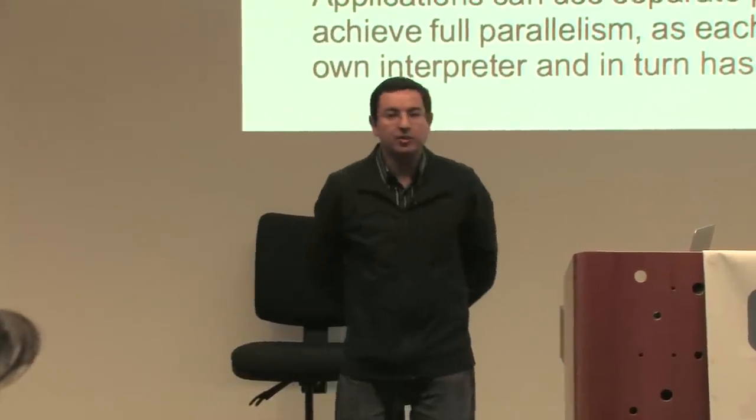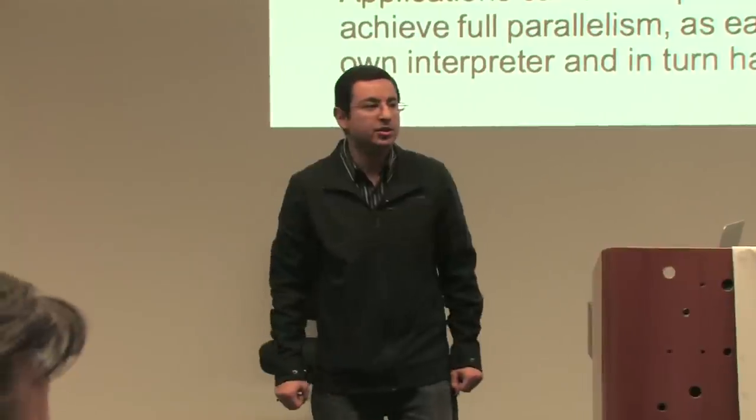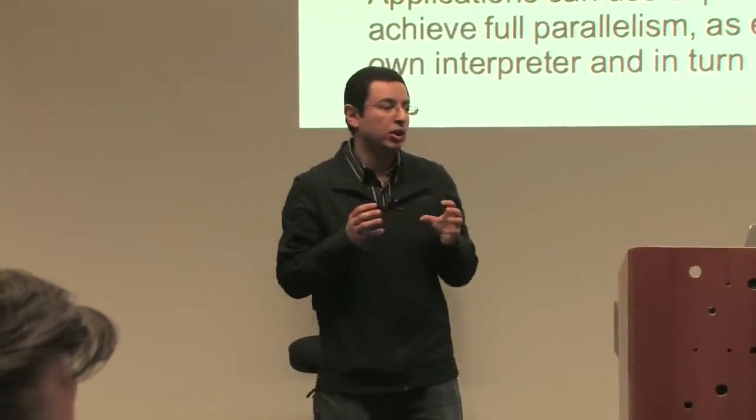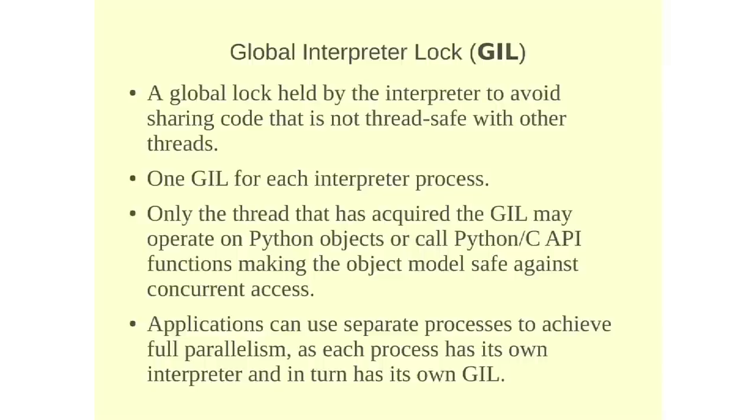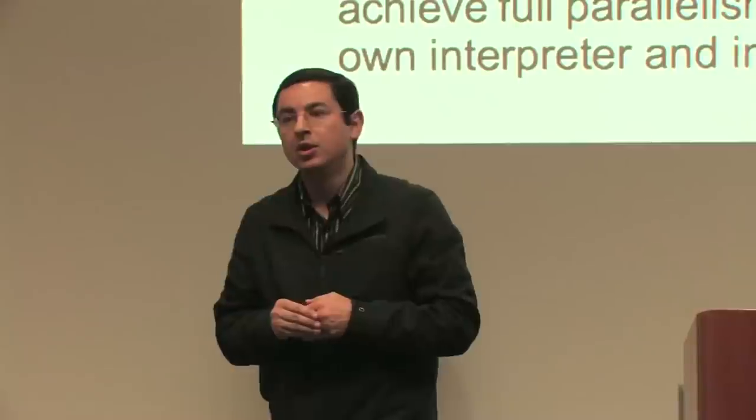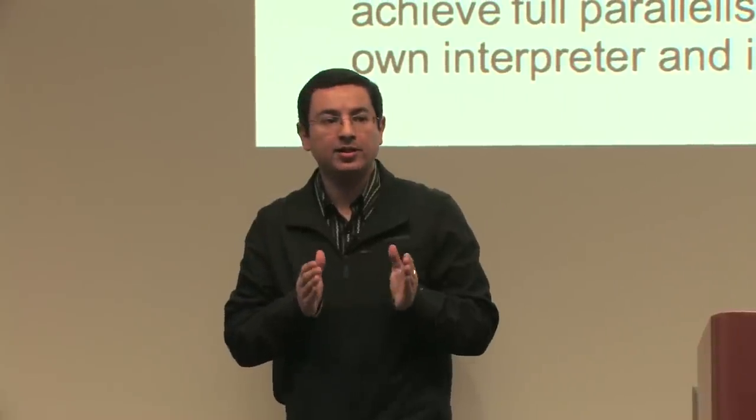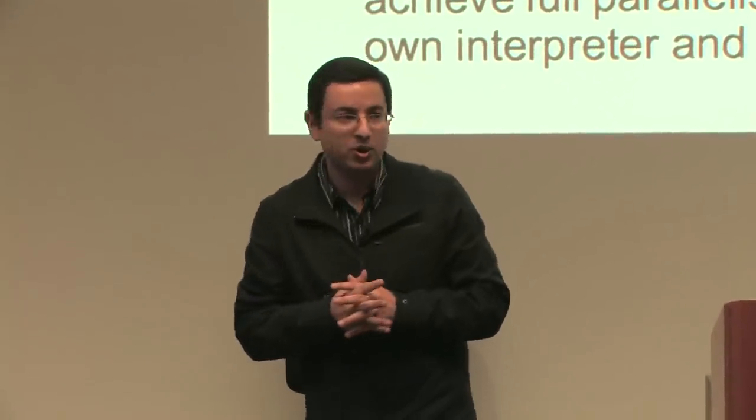I'll give you a little bit of description of what the GIL is to try to clarify it. So it's a global lock held by an interpreter process. Every interpreter instance of Python has a GIL. And that lock stops two threads from accessing the same Python code at the same time. So only one thread can execute Python code at one time.